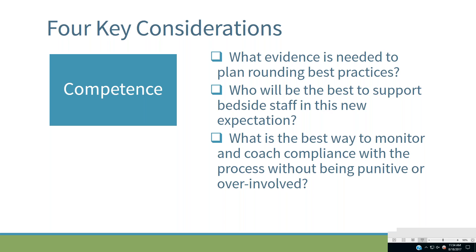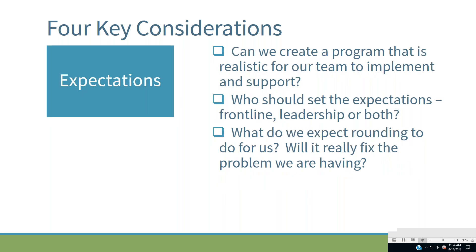Think about those things related to confidence, and what about the confidence of the coaches — who's going to be there and do what for you? The second of the four key considerations is expectations. Can we create a program that is realistic for our team to implement and support? You really cannot expect miracles from this process. Rounding cannot fix a dysfunctional team or process. If you have ineffective staffing or not enough staff, you can design the best practice out there, but if you're not able to implement that model as intended, staff are going to get even more frustrated and your outcomes will backfire.